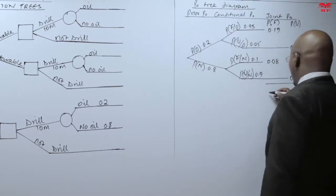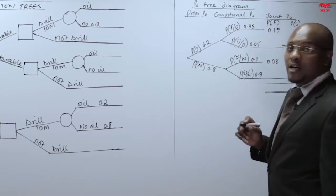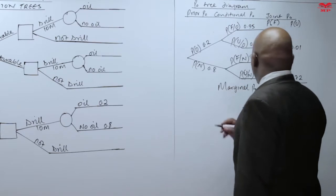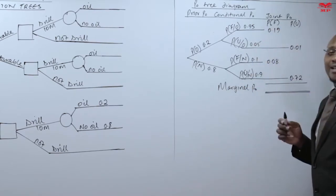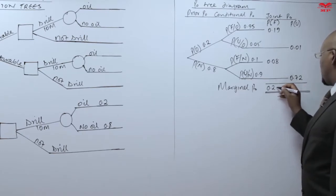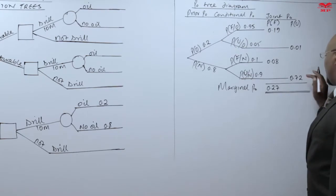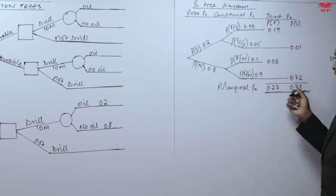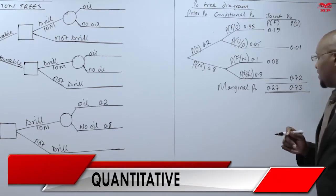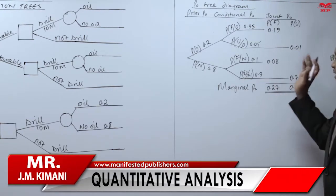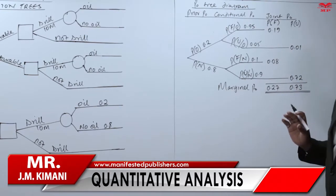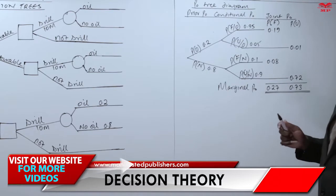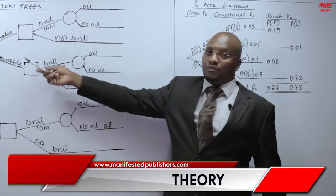Once grouped that way, we can show the marginal probabilities. Adding 0.19 and 0.08 gives 0.27 — that's the probability of a favorable report. Adding 0.01 and 0.72 gives 0.73 — that's the probability of an unfavorable report. Together they give 1. These marginal probabilities tell us the total probability of favorable and unfavorable outcomes.